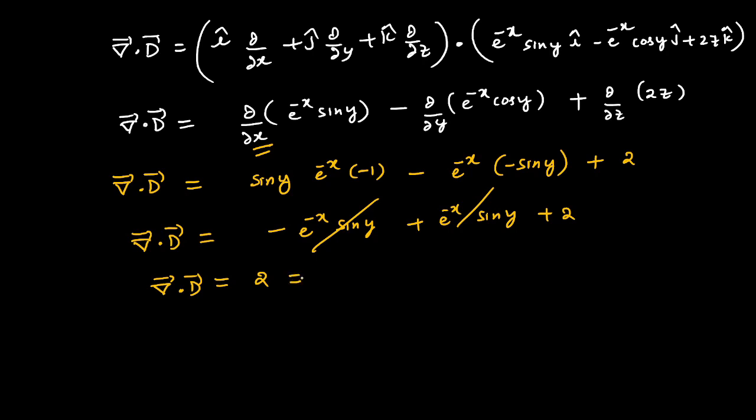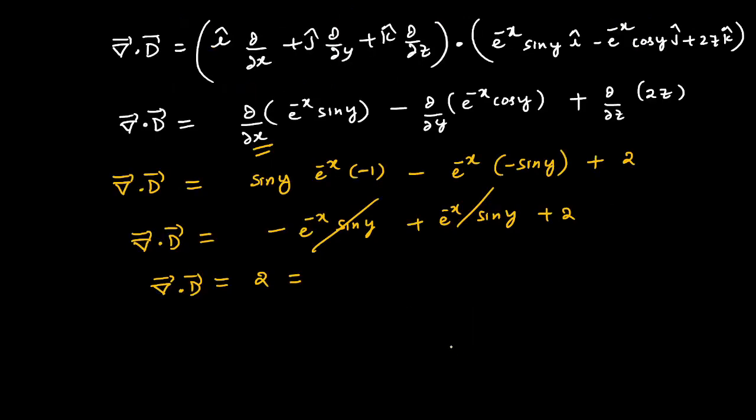Let's give this a number, equation 4. Using equation 4, we can recognize this as rho. Since we are employing SI units, this will be coulomb per meter cubed.